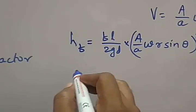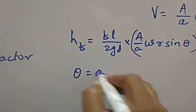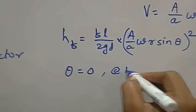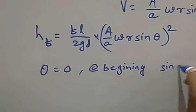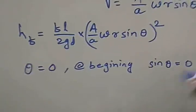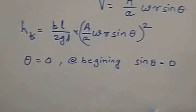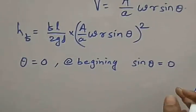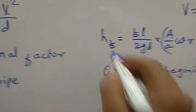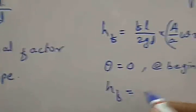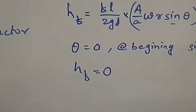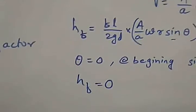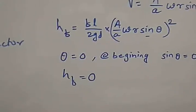When θ is equal to 0, that is at the beginning, sinθ is equal to 0 — that is sin 0 equals 0. So the HF value will be equal to 0. At the beginning, the frictional resistance is 0.